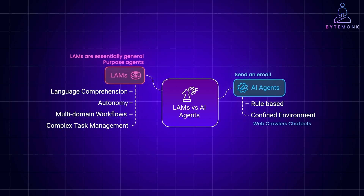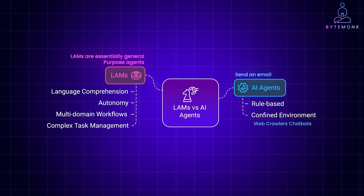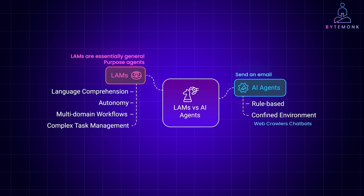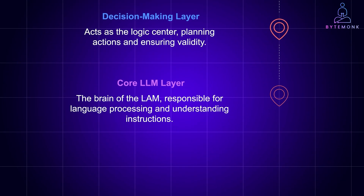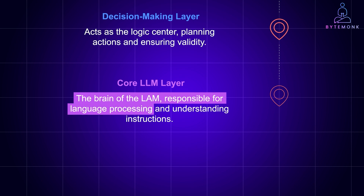The architecture of LAMs builds on top of existing LLM frameworks, but extends them by incorporating additional layers to handle action execution, decision-making, and application interaction. First, we have the core LLM layer — the brain of the LAM where language processing happens. This layer is responsible for understanding your instructions, like 'create a report' or 'send an email.' Models like GPT or BERT are often used here, translating your request into specific actionable steps.